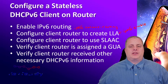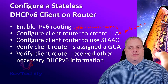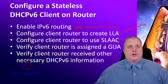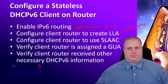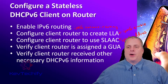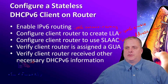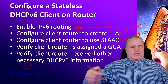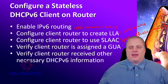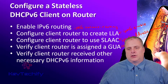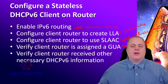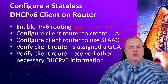Next, we have to configure the client to use stateless address auto-configuration. This interface needs to generate its own address. The command is IPv6 address auto-config — just like you're setting a manual address, but you put auto-config at the end. Then verify that the client router is assigned a global unicast address. You can do a show IPv6 interface brief command, and that will show you that you do have one. If not, you'll have to go back and look at your SLAAC configuration.